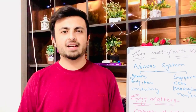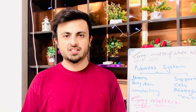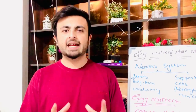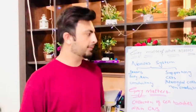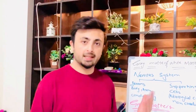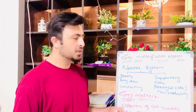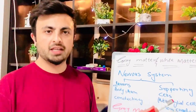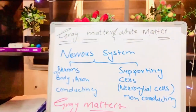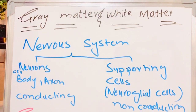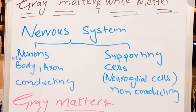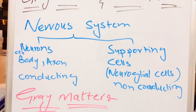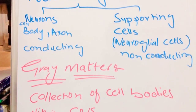Hello guys, welcome. We will continue our video lecture series on the nervous system physiology. Today we will discuss gray matter and white matter. Before going to discuss about white matter and gray matter, we will quickly recap what is our nervous system. The nervous system consists of two types of cells: our neurons and the supporting cells. Neurons consist of both cell body and the axon, while our supporting cells are neuroglial cells. Neurons are our conducting cells while the supporting cells are non-conducting cells.